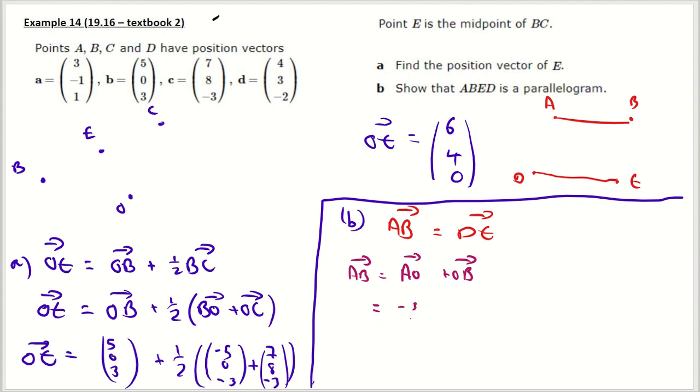Negative 3, 1, negative 1, so the auto drive there, 5, 0, 3. So that's going to equal to 2, 1, 2.